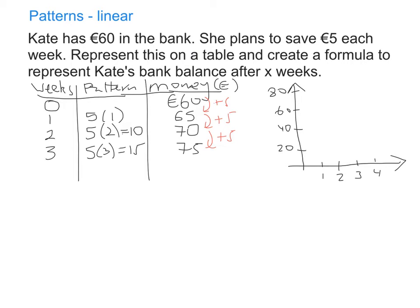If we think about it, when she started on week zero, so it's down at the zero on the x-axis, how much money did she have in her bank? She had 60 euro. So her first coordinate is going to be up here. Then after week one she had saved 5 euro. So we go across, and obviously I should have this labeled weeks and money. We're going to go across to week one and we're going to go up to 65.